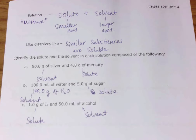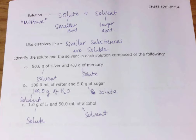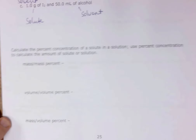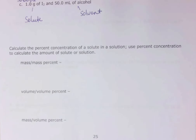In solution chemistry, it's important to convey how much is in a solution. It gets more complicated than just grams or milliliters because you have a solute and a solvent. This brings us to concentrations. Concentration is a very important quantity. For example, if a patient needs an IV solution, you can't just say give them some salt — you have to say give them a 5% solution.